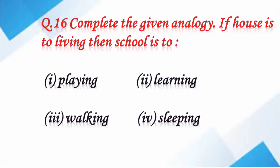Question number 16: complete the given analogy. If house is to living, then school is to what? We know that a house is for living and a school is for learning. So the second option is correct.